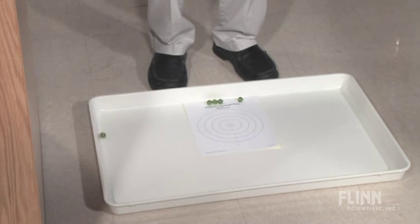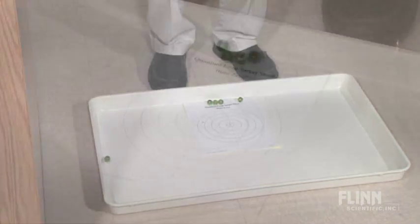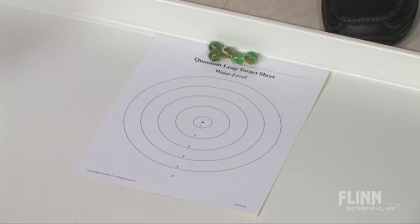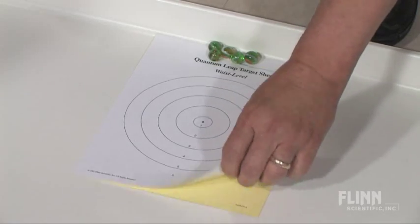Each height represents a different energy level of the electron. The target paper has a carbonless copy attached to record each marble strike.